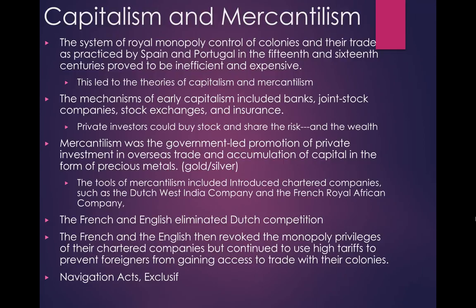In the 17th and 18th centuries, two new institutions of capitalism and mercantilism established the framework within which government-protected private enterprise participated in the Atlantic economy. Britain also attempted to limit the trade of their colonies according to mercantilist principles, and American colonies began to resent the British attempt to control their trade. The mechanisms of early capitalism included banks, joint stock companies, stock exchanges, and insurance.